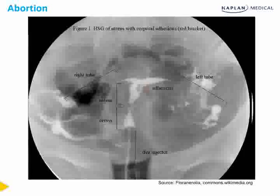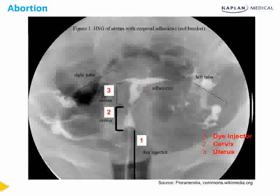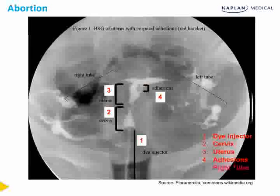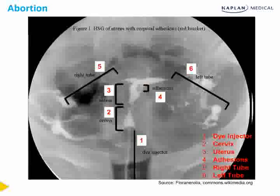Another anatomic cause of spontaneous abortion is intrauterine adhesions. On this hysterosalpingogram, we see the dye injector, the cervix, the uterus with adhesions inside, the right tube, and the left tube, with filling and spilling of the dye into the pelvis on either side. Another name for intrauterine adhesions is Asherman syndrome, which is a possible result of a vigorous dilation and sharp curettage.